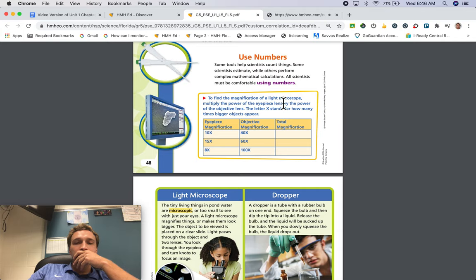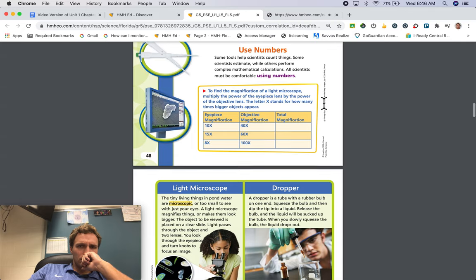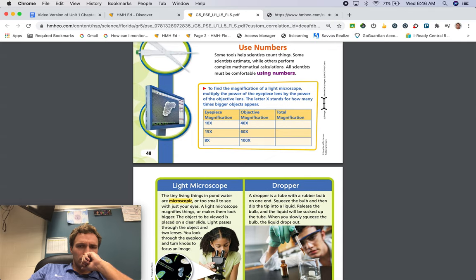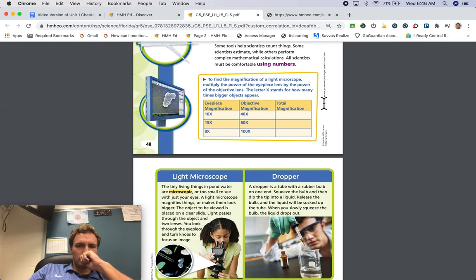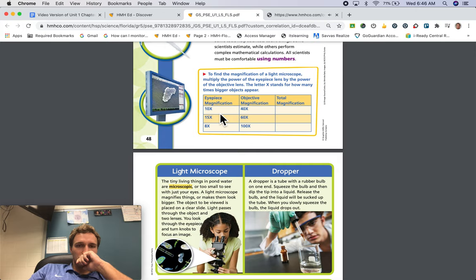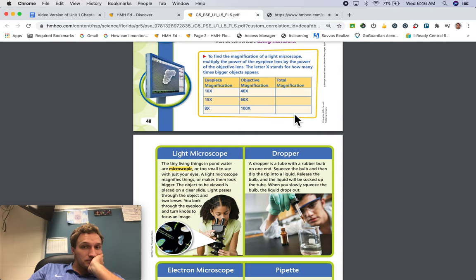To find the magnification of a light microscope, multiply the power of the eyepiece lens by the power of the objective lens. The letter X stands for how many times bigger objects appear. Eyepiece magnification, 10 times. Objective magnification, 40 times. Total magnification. Eyepiece magnification, 15 times. Objective magnification, 60 times. Total magnification. Eyepiece magnification, 8 times. Objective magnification, 100 times. Total magnification.